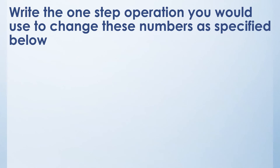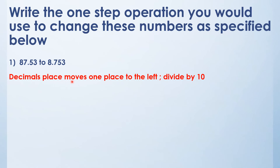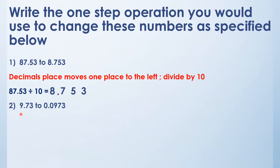इस property का use करके यह question करते हैं, जिसमें सिर्फ एक step operation से number को convert करना है. 87.53 को 8.753 बनाना है — यहाँ two decimal places थे और यहाँ three decimal places हैं, मतलब decimal point one place move कर गया left की तरफ. Decimal place moves one place to the left when divided by 10. तो 87.53 को 10 से divide करते हैं, decimal यहाँ आ जाएगा — answer हो जाएगा 8.753.